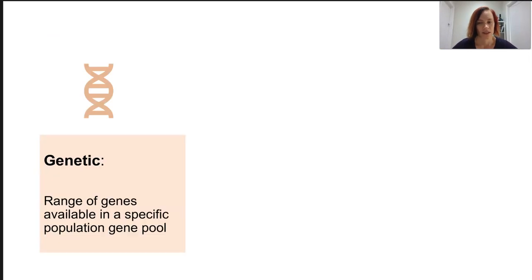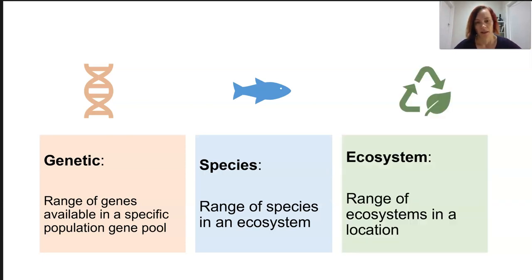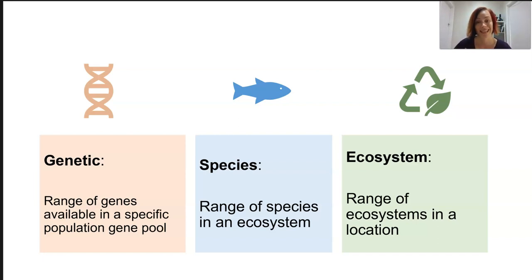Genetic diversity includes a really wide range of genes within a gene pool in one specific species, and species diversity is the range of species within that ecosystem. Ecosystem diversity includes both the range of ecosystems in a location but also takes into account the variation within an ecosystem — lots of micro-habitats within one ecosystem can provide more opportunities for organisms to find niches.